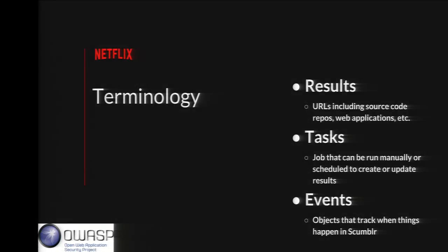Let me cover some terminology specific to Scumblr. Results — especially in the Dirty Laundry version — are basically assets. Each maps back to a URL, so this could be a source code repo or a web application. These are the core objects Scumblr stores, allowing you to sort, filter, and put workflows around them. Tasks are basically jobs that can be run manually or on a scheduled basis. They can do things like creating new results or creating new assets in your Scumblr instance.